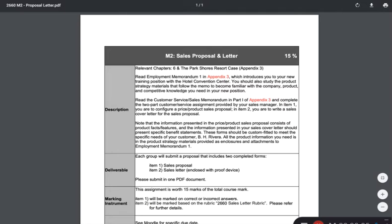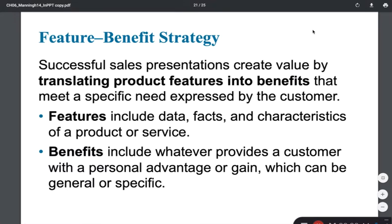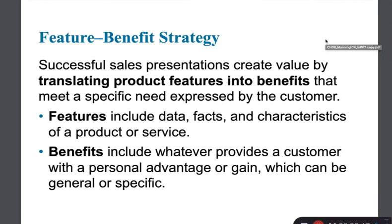The first thing we're going to do is understand the difference between features and benefits, and that's where chapter 6 is very helpful. In chapter 6 you'll learn the difference between features and benefits, and really the sales letter is all about discussing the benefits.